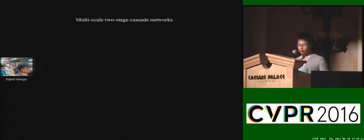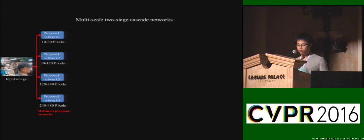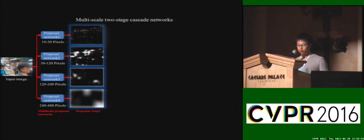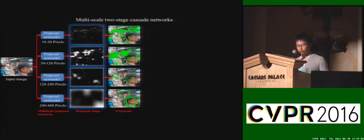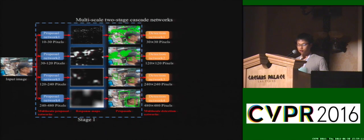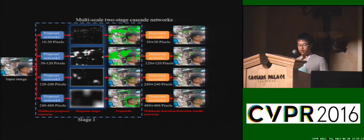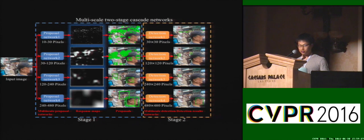Apart from the dataset, we also propose a baseline to explicitly deal with large-scale variations. We propose a multi-scale two-stage cascade framework that employs a divide-and-conquer strategy. Specifically, we divide faces into four groups based on scale. For each group, we first train a proposal network to generate response maps for specific scales, then employ a region proposal network on these response maps to generate multi-scale proposals. This is the first stage. After generating proposals, for each scale, we train deep neural networks to conduct face and non-face classification and bounding box regression simultaneously, then merge detection results across scales to generate final face detection results.